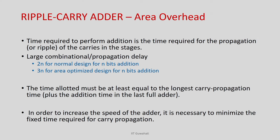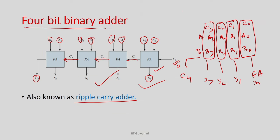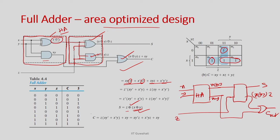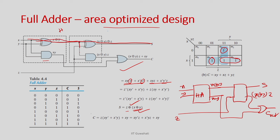Let us explain the area overhead and delay of the ripple carry adder. Delay is the time it takes to produce the output. The primary bottleneck is the combinational path from the first carry in through all blocks to the final carry out. One full adder has a delay of 3 gate delays (the critical path through 3 gates). With 1 gate delay = 1 unit, one full adder has 3 units of delay.